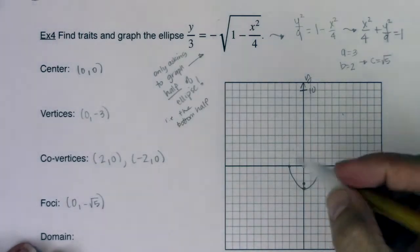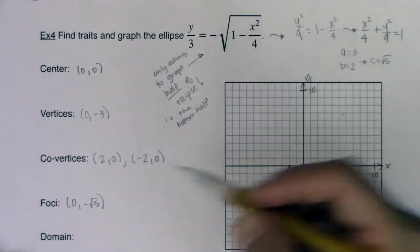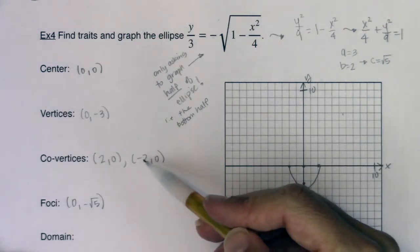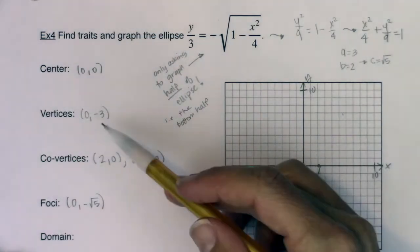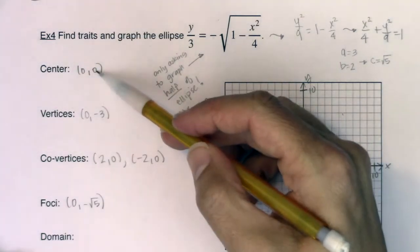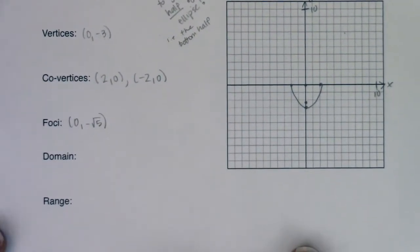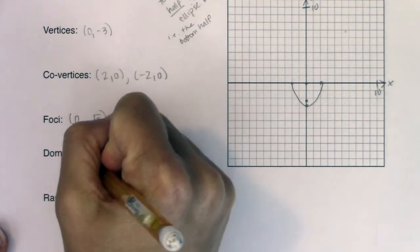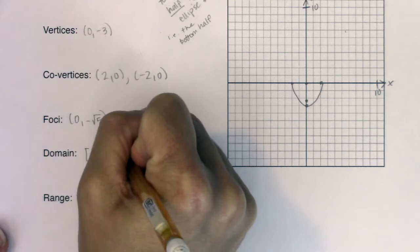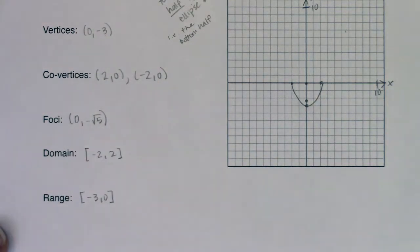And then we can go figure out the domain and range. So it looks like the leftmost point is negative 2, 0. The rightmost point is 2, 0. So it looks like my domain is negative 2 to 2. It looks like my range goes from a low of negative 3 to a high of 0. So I'm going to go ahead and let me move this up. And then let's go ahead and write in our domain, which is from negative 2 to 2. And then our range, which is from negative 3 to 0.